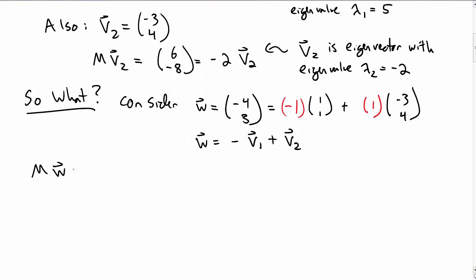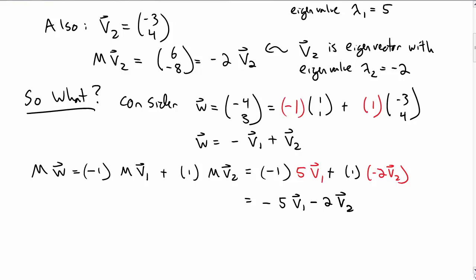Well one advantage of this is when I take M times W, well this is a little bit easy to calculate. So it's just -1 times M times V1 plus 1 M times V2. But I know what M times V1 is. That's just the eigenvalue times the eigenvector V1. And same thing for M times V2. That's just the eigenvalue -2 times V2. And so the answer I get here is -5V1 - 2V2.